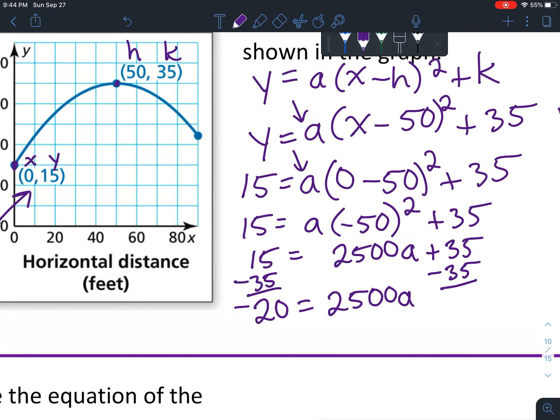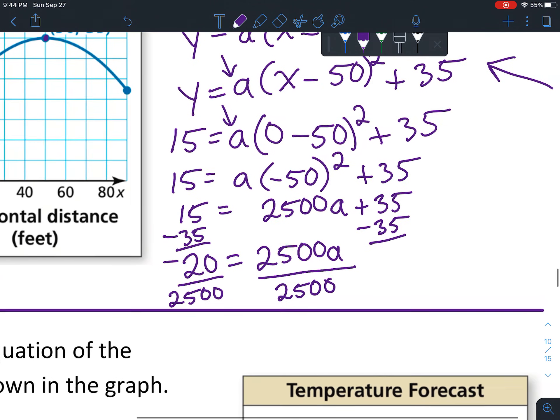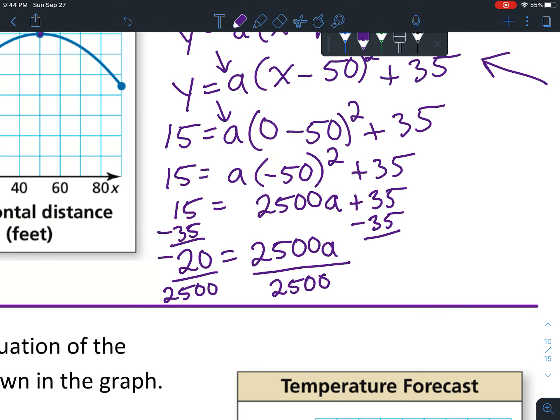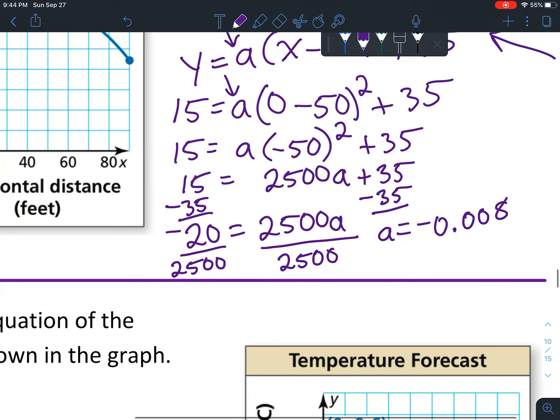You might say that's not going to turn out into an integer or whole number - no, it's not. Unfortunately, some of these problems won't be exactly a whole number. When you divide, you get a = -0.008.